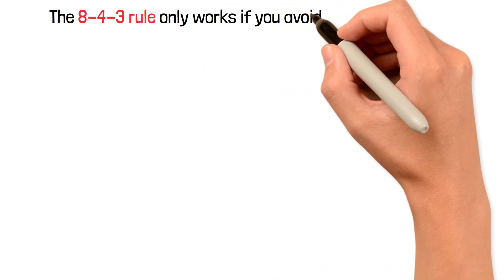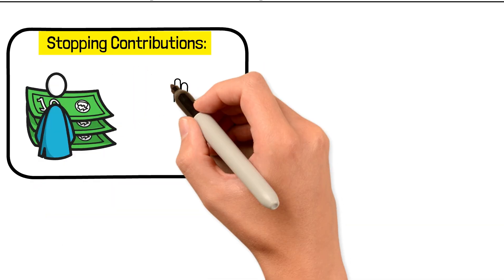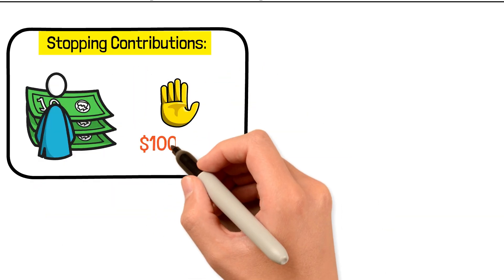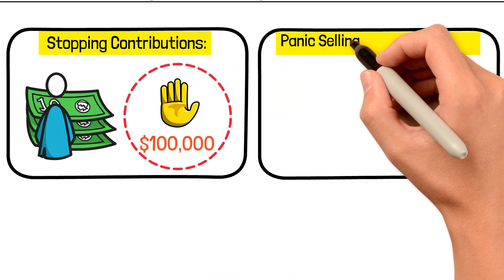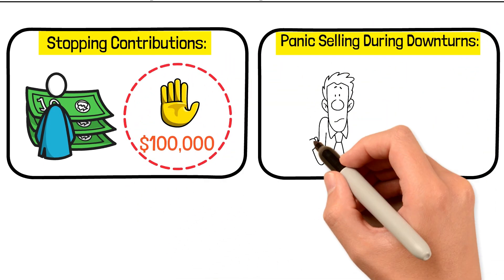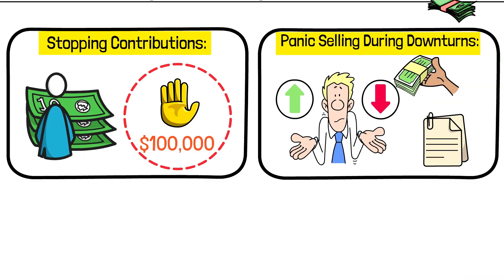But the 8-4-3 rule only works if you avoid these mistakes. Stopping contributions. The rule assumes consistent investing. If you stop after hitting $100,000, you'll dramatically slow your progress. Panic selling during downturns. Market crashes are inevitable. Keep investing through downturns, buying more shares when prices are low.